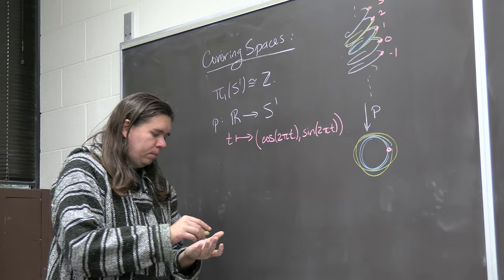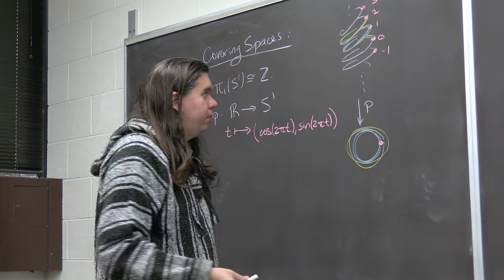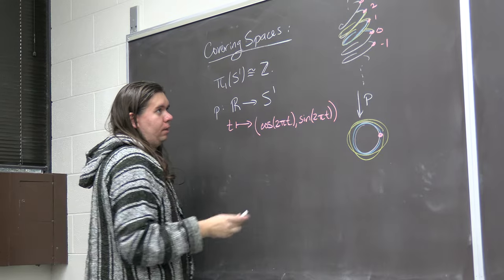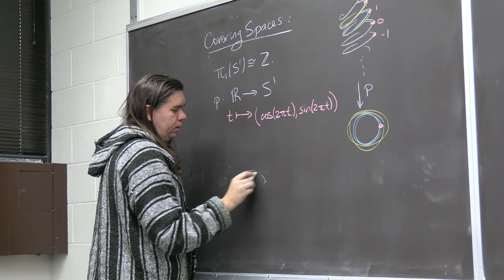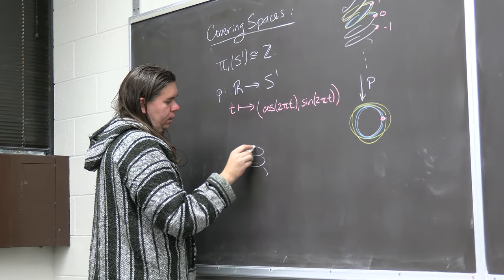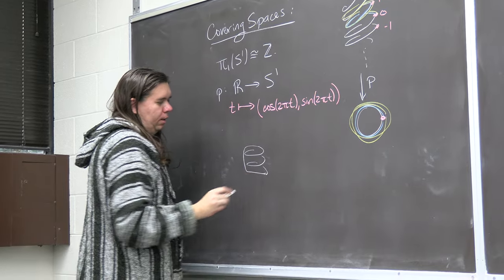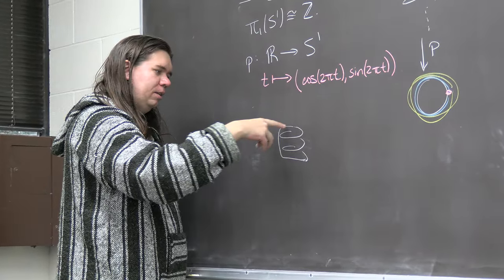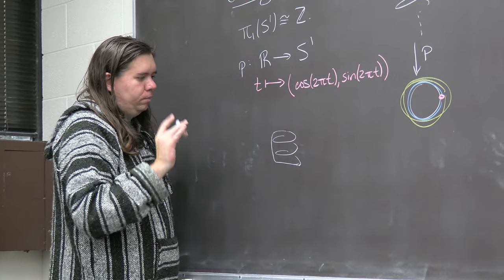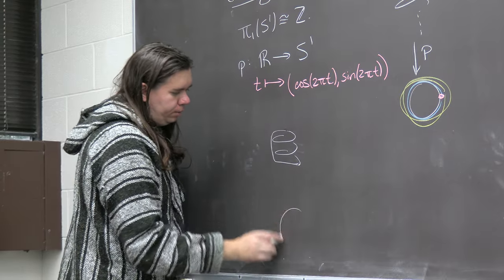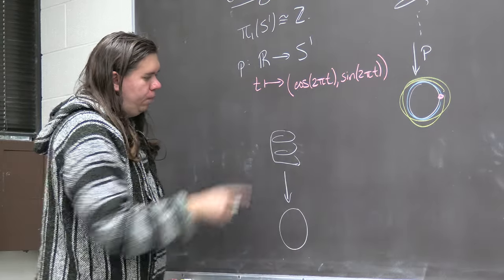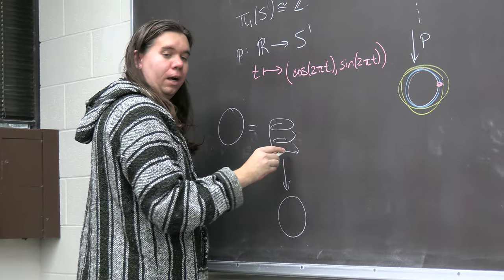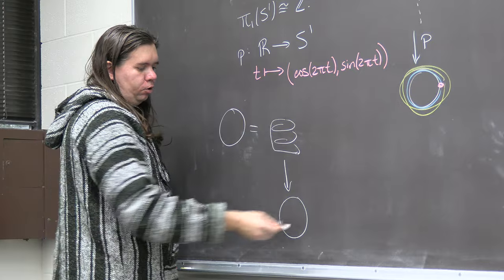This is also an example of a covering space. Here's a quick additional example: instead of an infinite helix, you could have one that only loops around a couple times. It could come back down to the bottom — this is really just a circle twisted up so it goes around three times. Going around this circle once means going around the base circle three times.